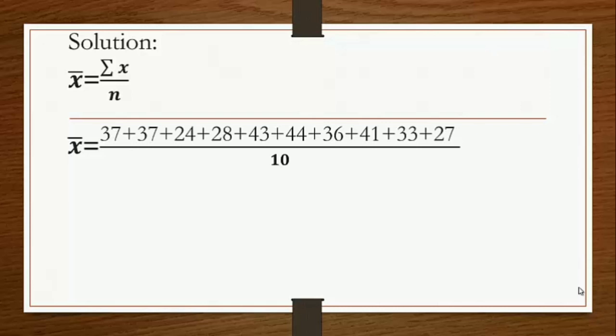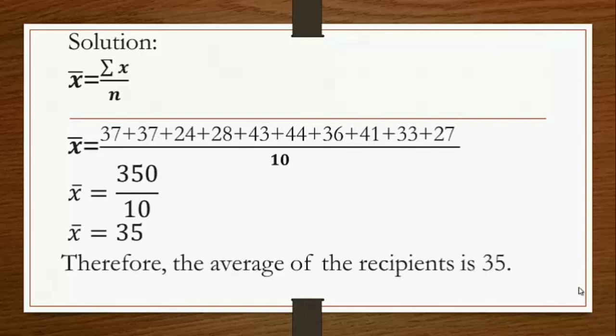Substituting in the formula, summation of x means we add all the data given: 37 plus 37 plus 24, down to 27, divided by n which is 10. So we have 350 divided by 10. Therefore, the average age of the recipients is 35.